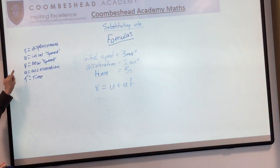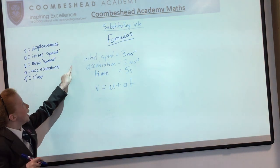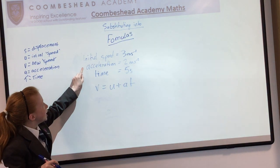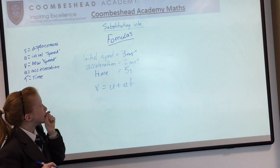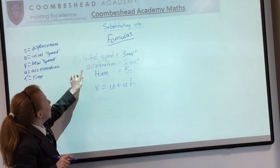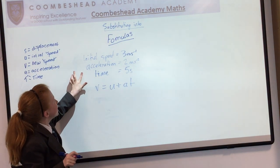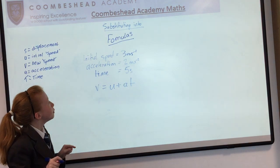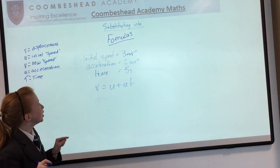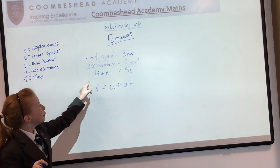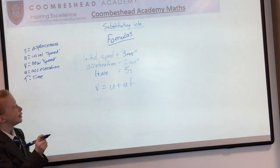We are using U as initial speed, A as acceleration and T as time. Our initial speed is 3 meters per second, acceleration 2 meters per second squared and time is 5 seconds.